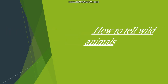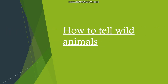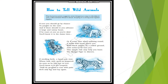Hello students and welcome to your English language class. Today we will be reading the poem 'How to Tell Wild Animals' which has been written by Carolyn Wells. The poetess has explained the characteristics of various wild animals in a very funny way. She has used a lot of humour to introduce a variety of wild animals, and the title means how one can identify or distinguish between various wild animals.